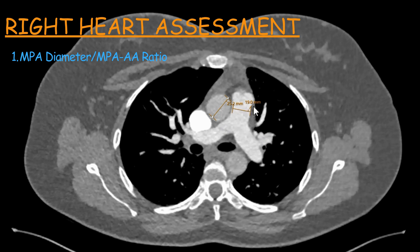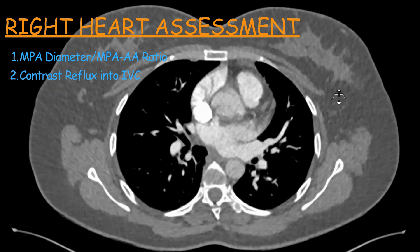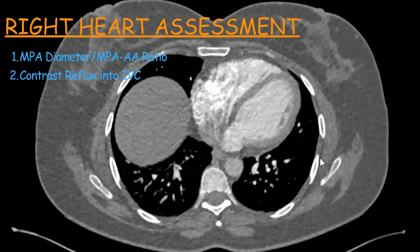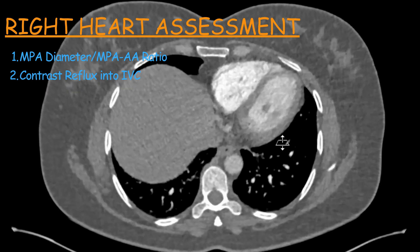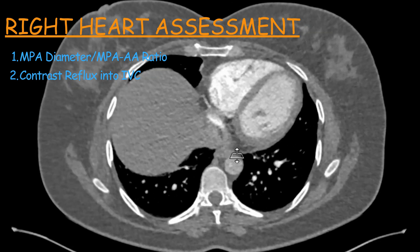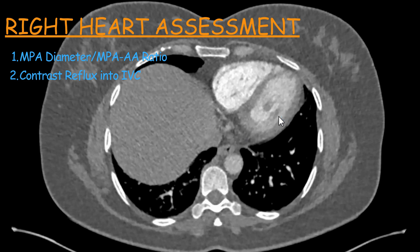Although in children, the pulmonary artery diameter can normally be higher. In adults, a ratio greater than one — meaning the main pulmonary artery diameter is greater than the ascending aorta diameter — is considered abnormal and one of the signs of increased pulmonary artery pressure. The second sign is looking at the reflux of contrast into the IVC. In this case you can see there is no reflux of contrast into the IVC, and I'll show you a few examples of how reflux of contrast into the IVC and intrahepatic veins looks.